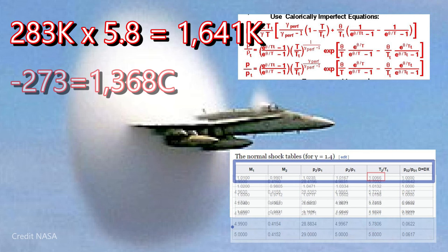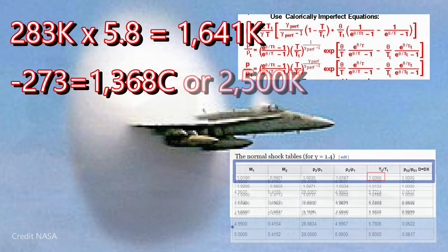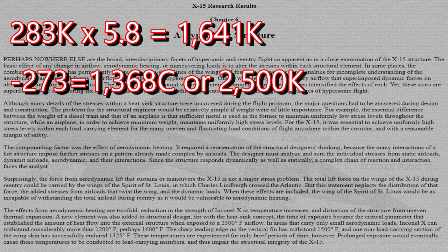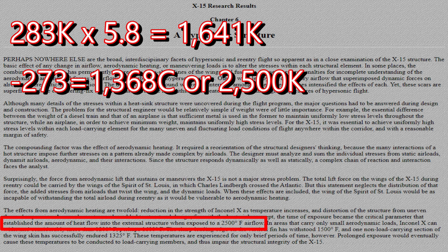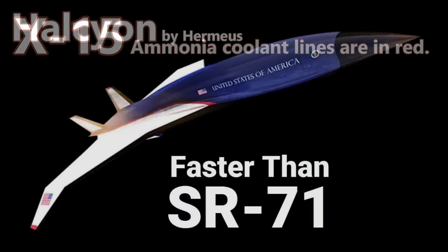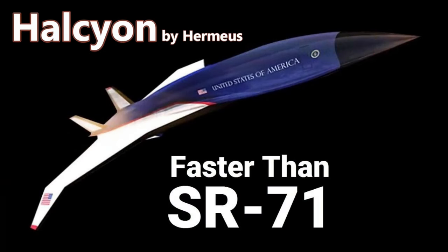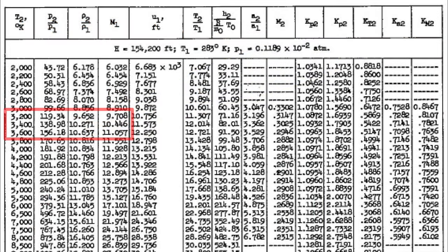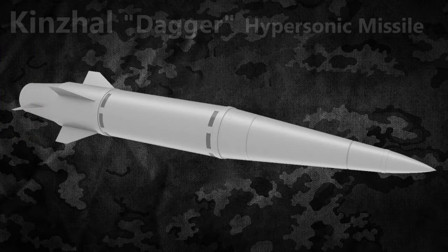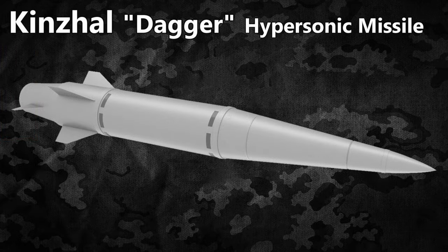That gives 1641 Kelvin — about 1368 Celsius, or almost 2500 degrees Fahrenheit. That makes a lot more sense. This was the temperature reflected back on the X-15, and what will be felt by the Halcyon when it takes to the skies. The X-15 used a heat sink with active cooling using ammonia fuel to reduce the heat load on the skin. Halcyon will probably use its methane fuel similarly, sending absorbed heat through the engine. Our calculations at Mach 10-12 used the Kelvin scale, giving T2 in Kelvin, so our estimates for the Kinjal hypersonic missile were correct. The Kinjal does not use active cooling because it is not reusable.